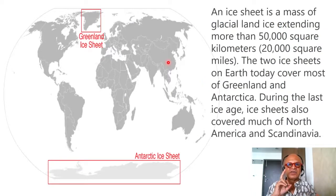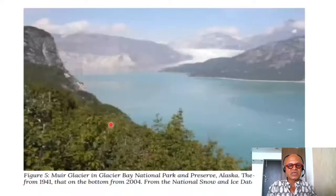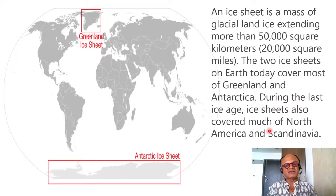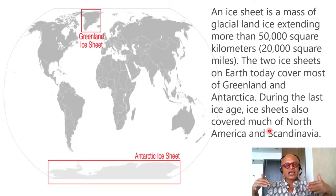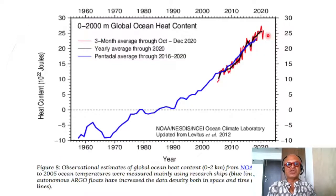These are the ice sheets. An ice sheet is a mass of glacial land ice extending more than 50,000 square kilometers, or 20,000 square miles. The two ice sheets on Earth today cover most of Greenland and Antarctica. During the last ice age, ice sheets also covered much of North America and Scandinavia. The last ice age ended about 12,000 years ago, and ice sheets had come all the way down to Long Island, New York, and down into Europe.